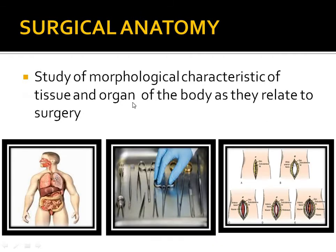Surgical anatomy means the study of body parts, tissues, and organs in relation to surgery. It is the study of morphological characteristics of tissues and organs as they relate to surgical procedures. For example, if we need to operate on the intestine, we first make an incision in the skin.